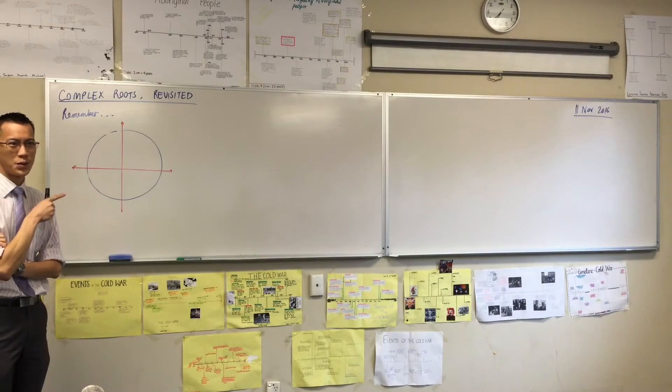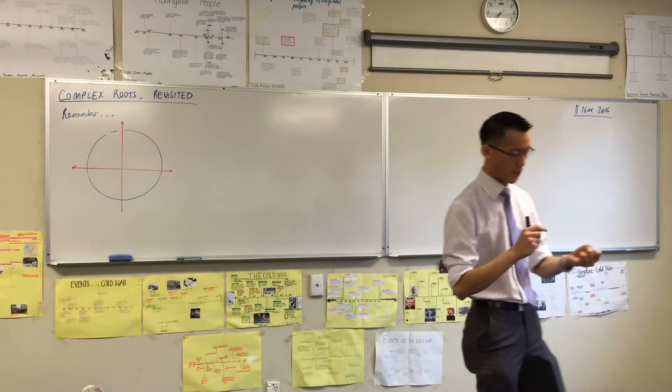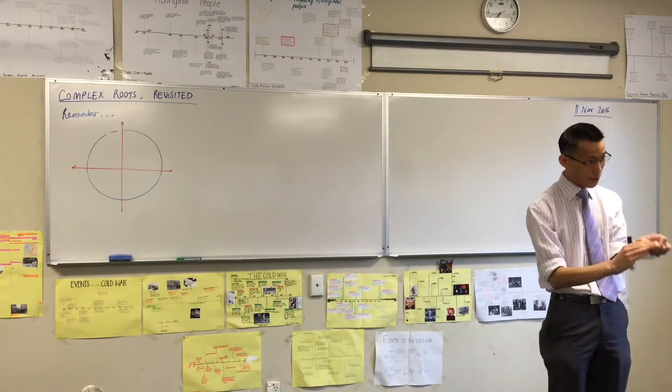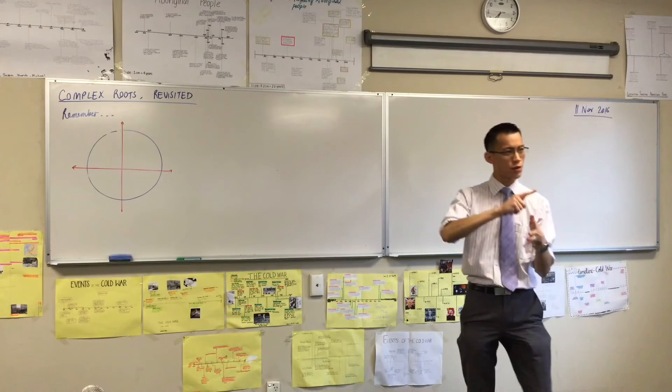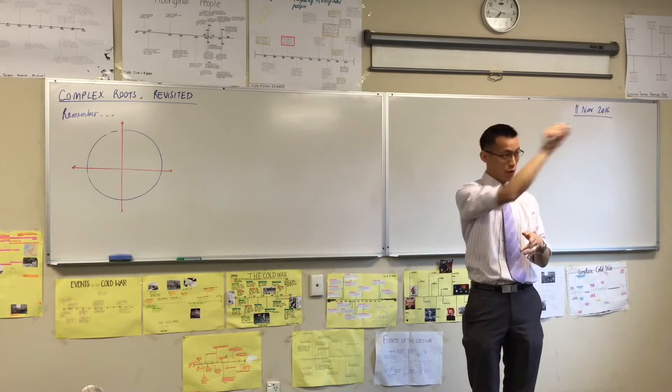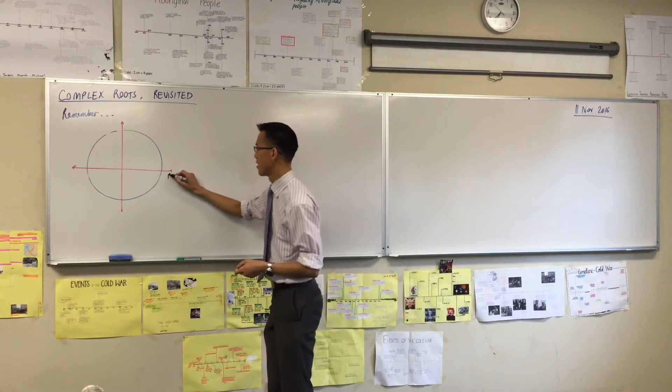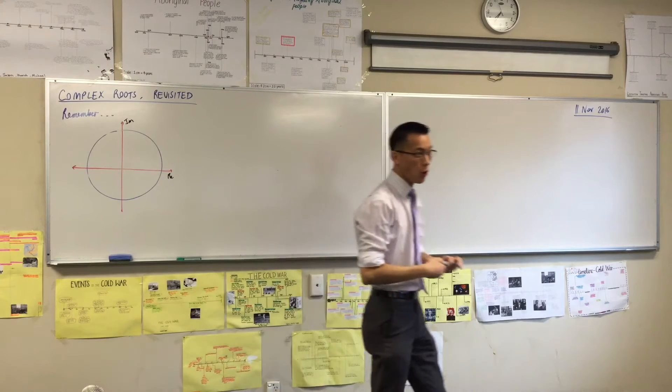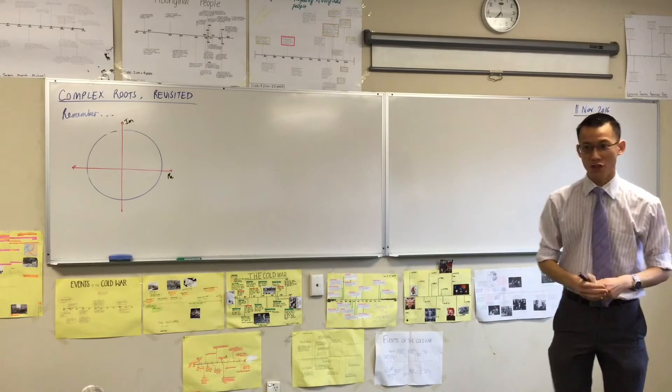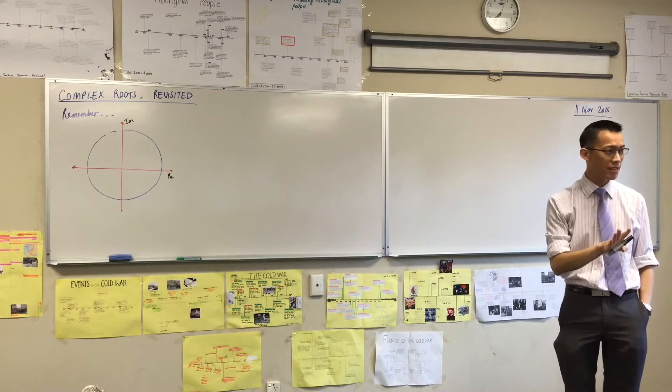This diagram was super important to us. Do you remember? We concluded using some fancy use of DeMoivre's theorem and polar form that if you are taking the roots of a complex number, wherever it happens to be on the complex plane, and this is the complex plane, then the result, all of the roots of that complex number that you get, you find them arranged on the circumference of a circle. Do you remember this idea?